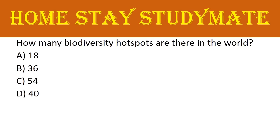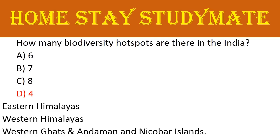How many biodiversity hotspots are there in the world? Options are 18, 36, 54, or 40. The right answer is 36. How many biodiversity hotspots are there in India? Options are six, seven, eight, or four. The right answer is four — these are the Eastern Himalayas, Western Himalayas, Western Ghats, and Andaman and Nicobar Islands.